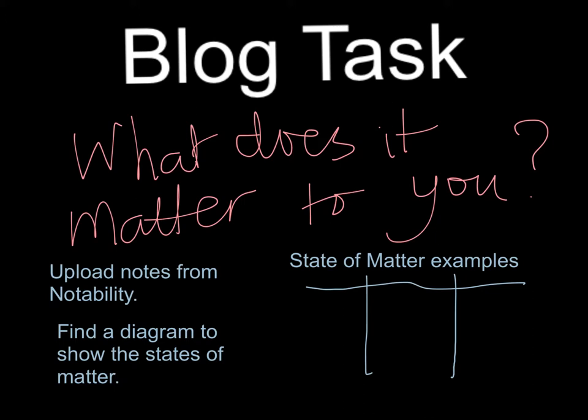Make sure you're really clear with your states of matter examples, and have them broken up into three columns — with the liquids, the solids, and the gases — and the examples in each column. Make sure that you are actually following the criteria, which is to upload the notes from Notability, and if you didn't get that done, you're going to need to do it. You also need to find a diagram to show the states of matter. Following the criteria gets you those good grades.